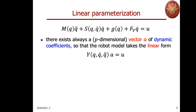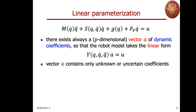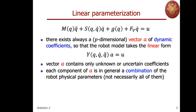We will use as a tool the linear parameterization. For completeness, I have added one smooth viscous term Fv times q-dot in the model. We know that we can always find a p-dimensional vector of dynamic coefficients such that the dynamic model takes the linear form in these parameters, with a regressor matrix Y and a coefficient vector a. The vector contains the unknown or uncertain coefficients, which are combinations of the physical parameters of the robot, and not all parameters will be present in general.